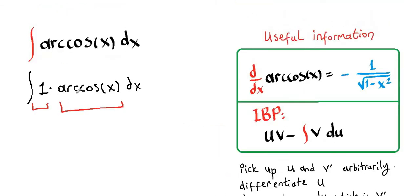So here, one dx times arccos of x. This is our u, this is our v prime, or dv. Now we're going to apply u times v, which is x times arccos of x,